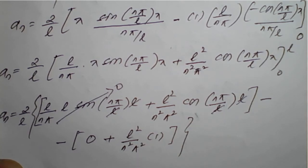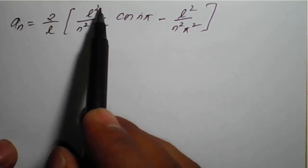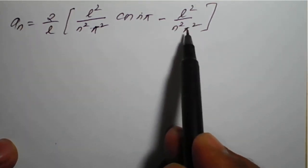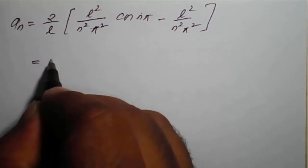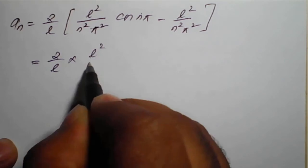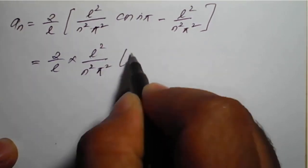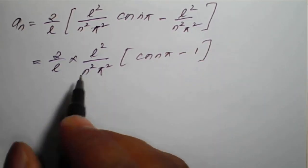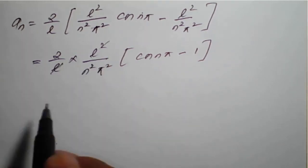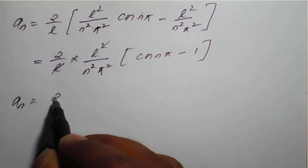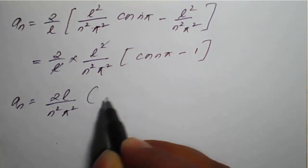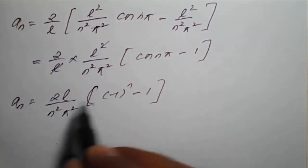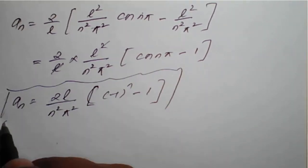On simplification, aₙ = (2/l) · (l²/n²π²)(cos nπ - 1). The l cancels, giving aₙ = 2l/(n²π²) · ((-1)ⁿ - 1). This is the required value of aₙ.